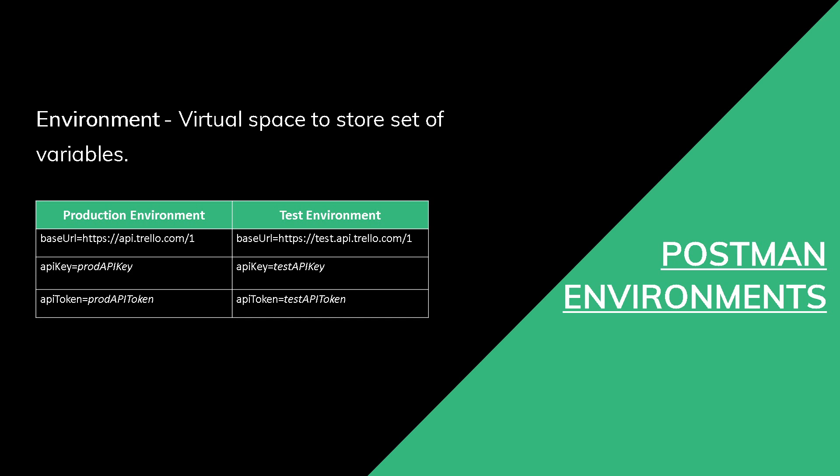In this example we have a production environment and a test environment — you can create as many environments as you want. In the production environment you can store variables like base URL, API key, and API token. In the test environment you can have the same variable names. When you're working with the production environment it will have access to all those variables.